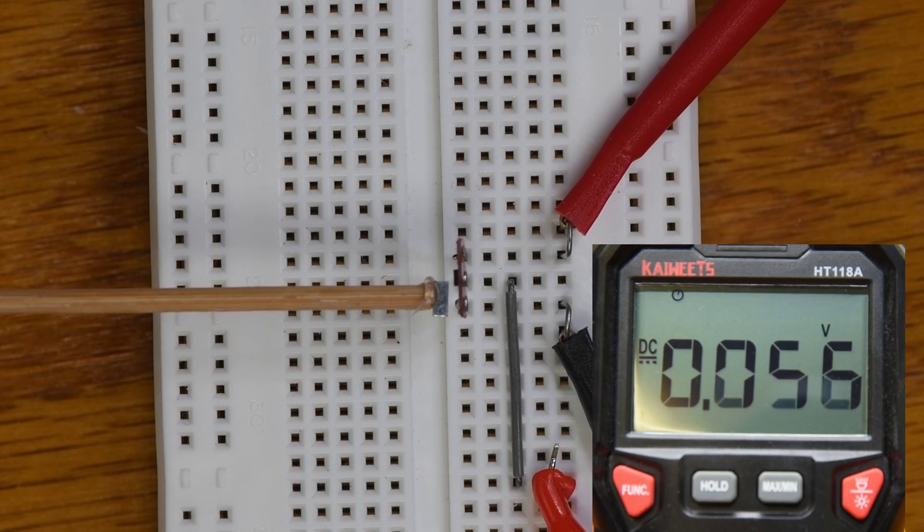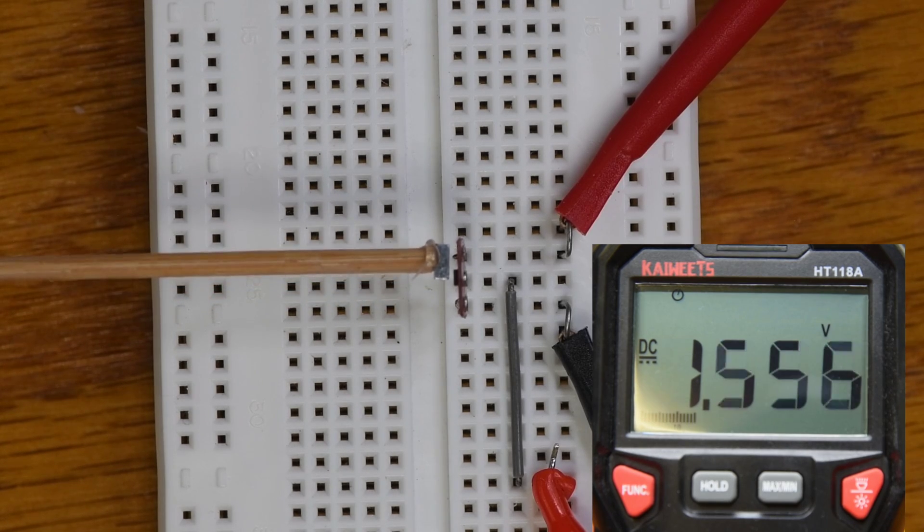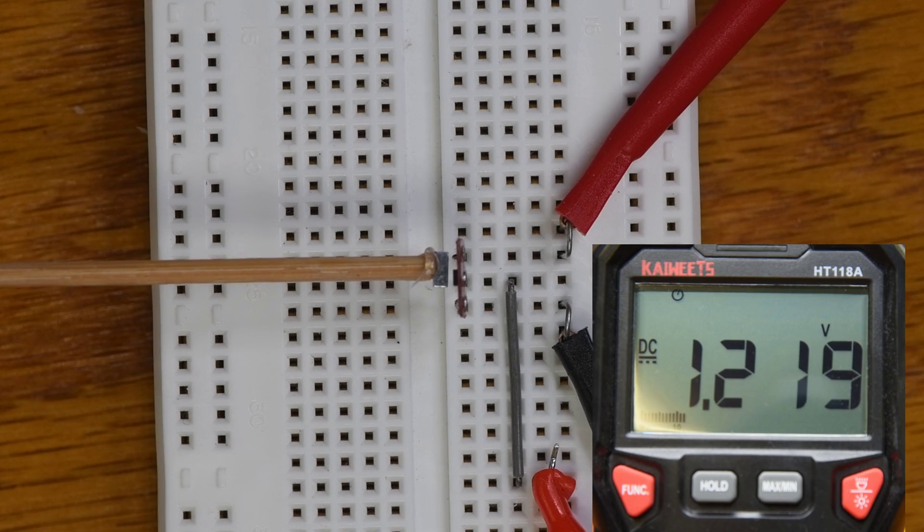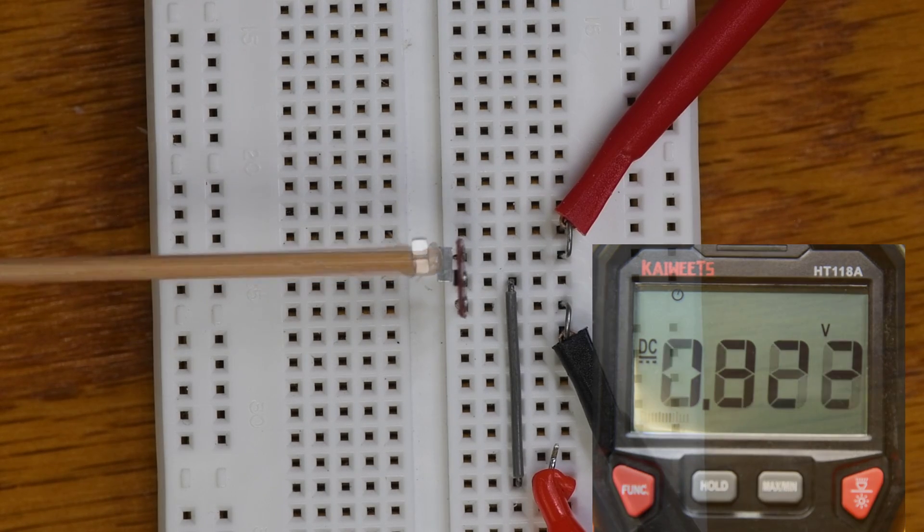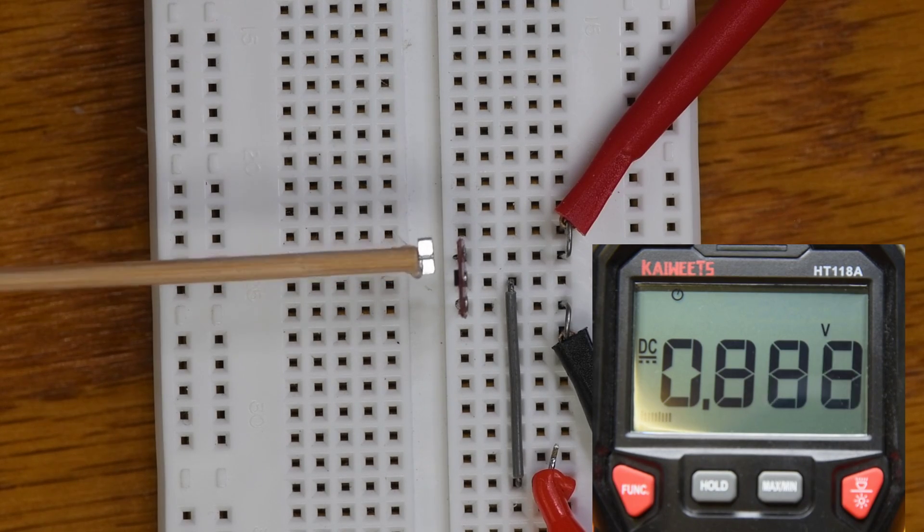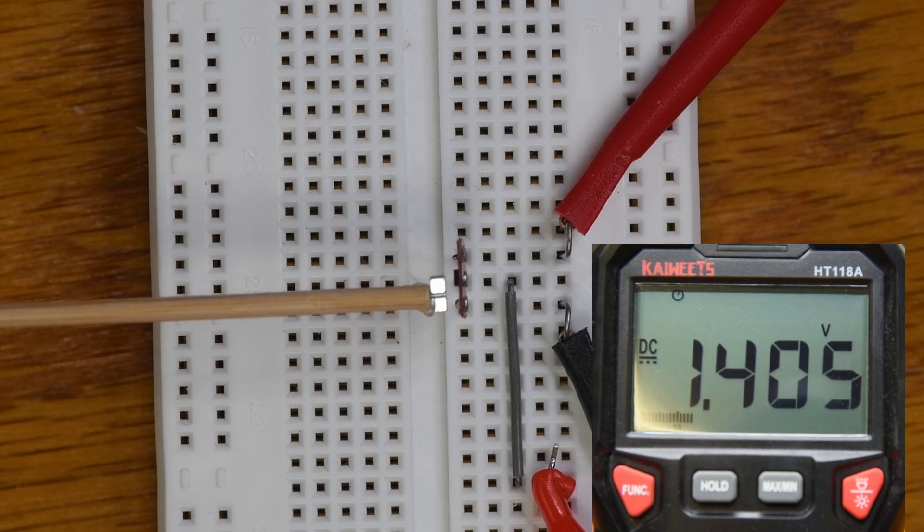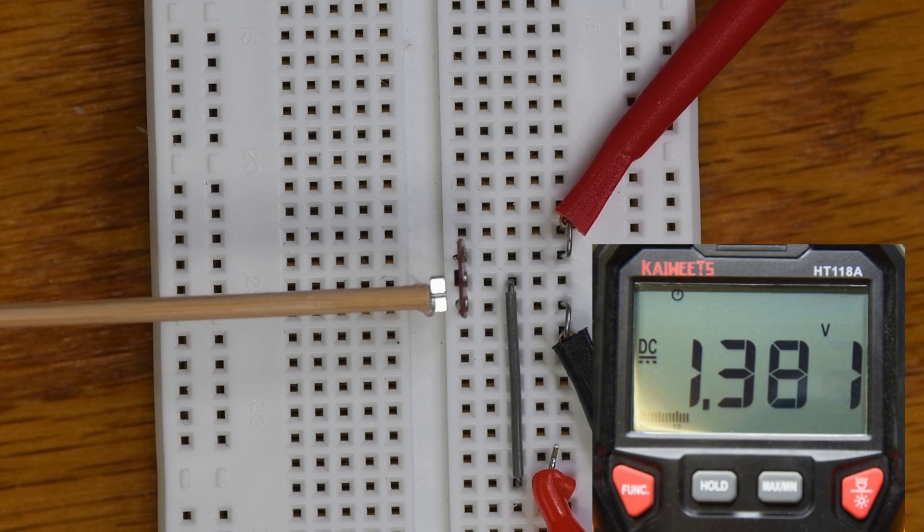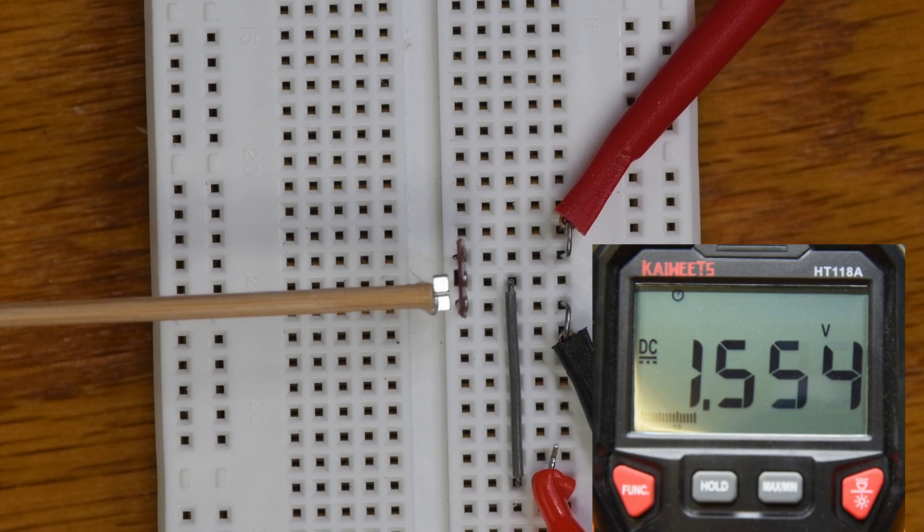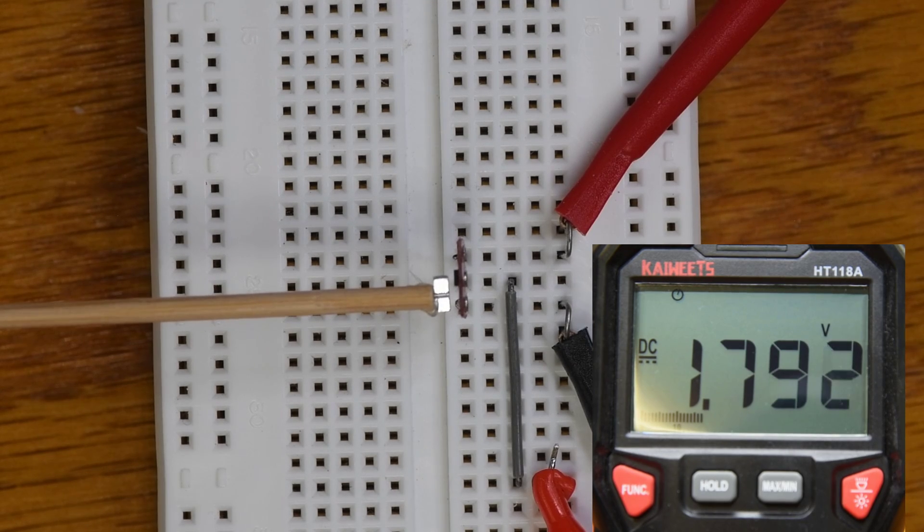And with the magnet moved down, the sensor outputs minimum. With the magnet moved up, the sensor outputs maximum. Now if I rotate the magnet 180 degrees. With the magnet up at the top, the sensor now outputs minimum. And as the magnet is moved down, the output goes up.